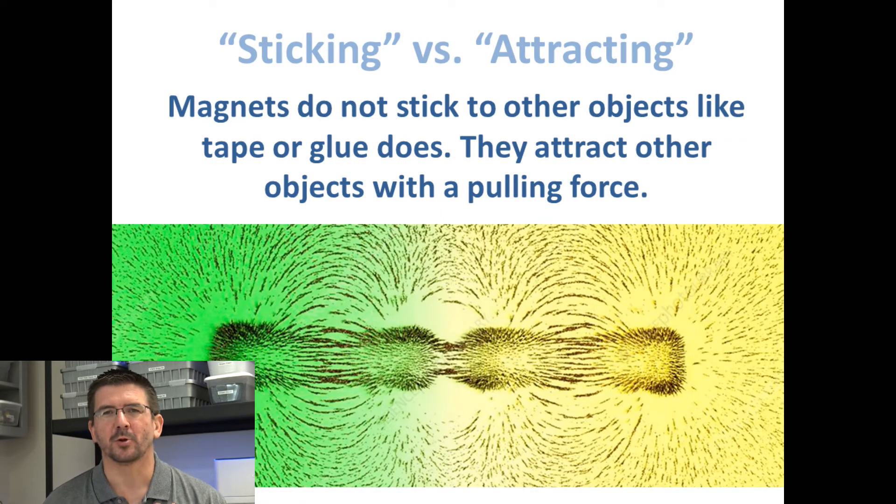One comment people often make about magnets is that magnets stick to metal or to other magnets. But think of it not so much as sticking, like you might stick something with glue or tape where there's a chemical adhering to it. That's not what's happening with a magnet.